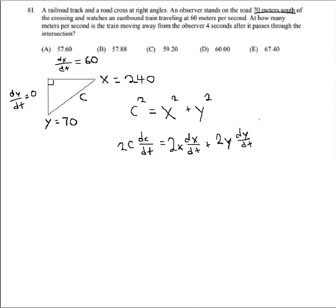Now, one thing to keep in mind here is that dy/dt is actually 0, right, because that's our observer. So this part we can get rid of completely. That's just the zero product property. We multiply by 0, makes the whole thing 0. So we're left with 2c dc/dt equals 2x dx/dt.